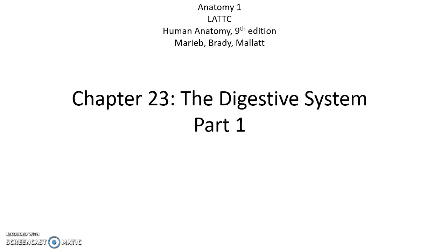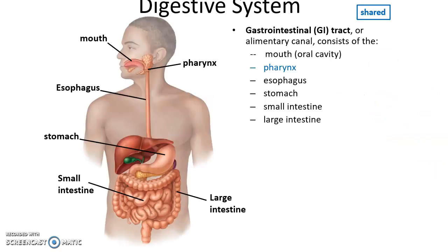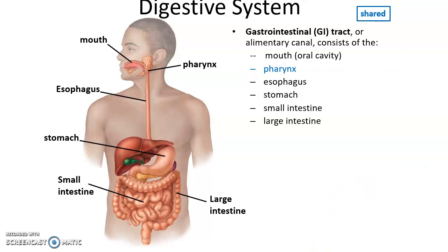Chapter 23, The Digestive System, Part 1. The digestive system consists primarily of the gastrointestinal tract.